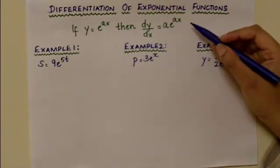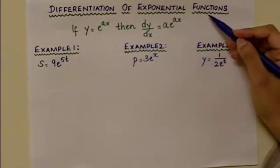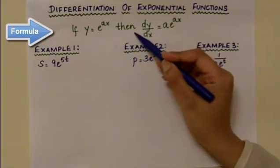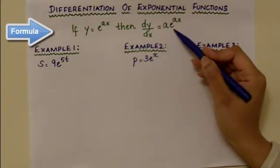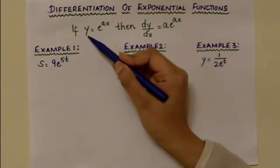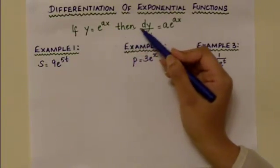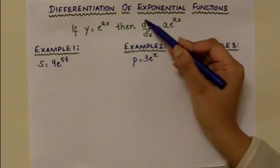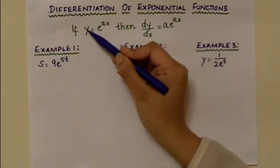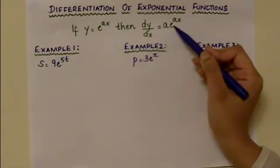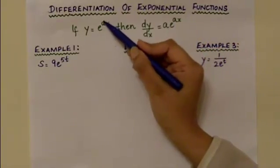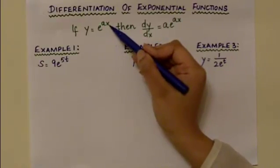This lesson is about the differentiation of exponential functions. The formula is: if y equals e to the power of ax, then dy over dx is equal to ae^(ax). You are differentiating equation y with respect to the variable x, so the differential coefficient is dy over dx. In the formula, a is the coefficient of the variable x.